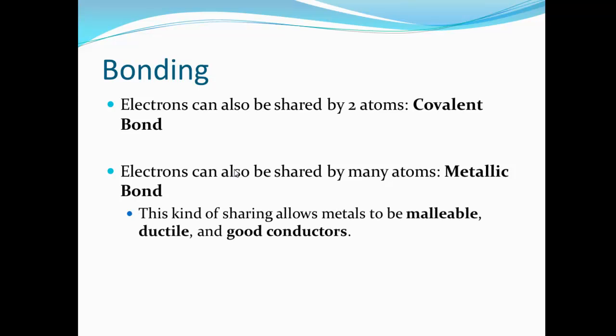Now the fact that they're all sharing these very weakly gives those metals certain characteristics. One, they're malleable. Two, ductile, which means you could pull them into a wire. Malleable means you could smash it down into a plate. And three, that they're good conductors because the electrons can easily flow from one to the next. So those are the three bonds. We'll see you tomorrow.